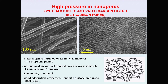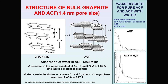The activated carbon fiber consists of small graphite particles of 2.5 nanometer size, and the pore system forms slit-shaped pores of approximately 1.4 and 1 nanometer size. On the basis of our X-ray results, we find that the structure of the ACF nanocrystallite has a turbostratic character and the lattice constant is 3.78 angstroms. When water was absorbed by ACF, the structure of ACF changed and the lattice constant became the same as that in graphite.